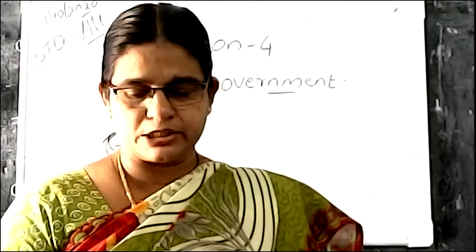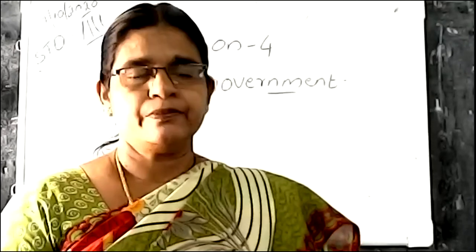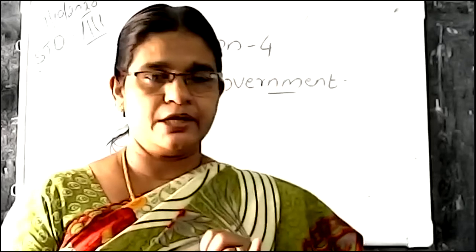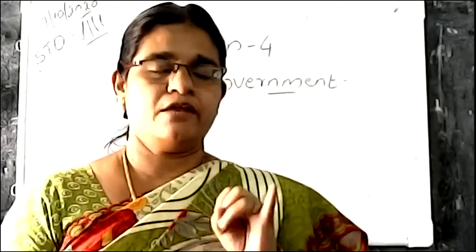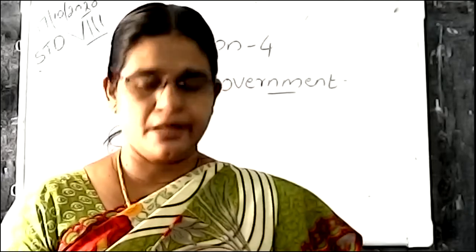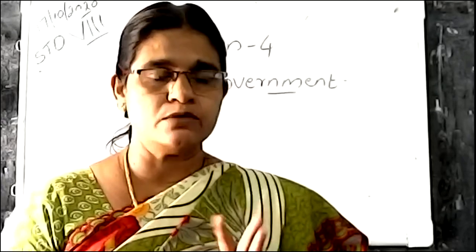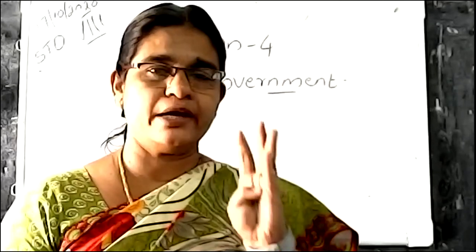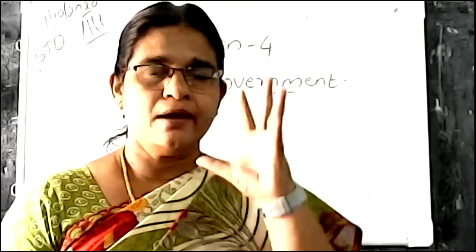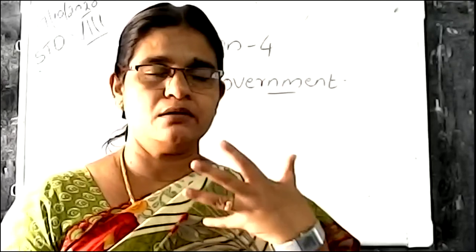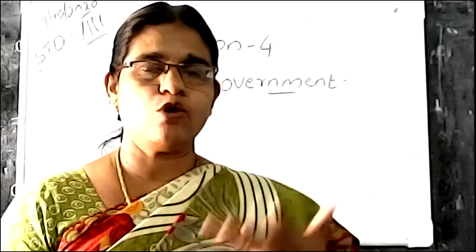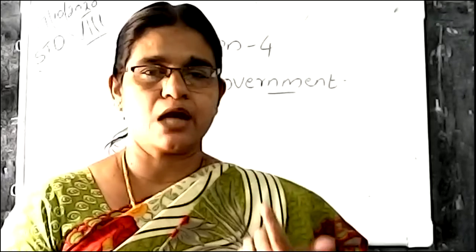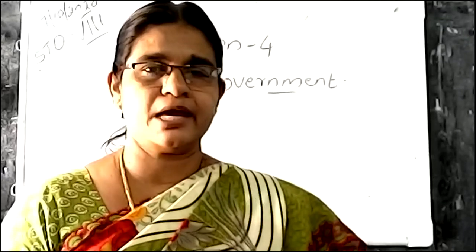The next wing is the executive. Who are included in the executive wing? President, Vice President, Prime Minister, Council of Ministers, and the Bureaucracy. Highly qualified and educated people are the bureaucratic people. The executive wing consists of the President, Vice President, Prime Minister, Council of Ministers, and Bureaucracy. They are implementing the laws.